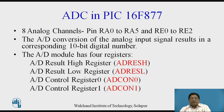ADRESH and ADRESL are called the result registers. The 10-bit digital output of the ADC — that is, the result of the ADC — will get stored in ADRESL and ADRESH registers. The two control registers, ADCON0 and ADCON1, are provided to control the operation of the ADC.